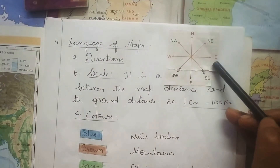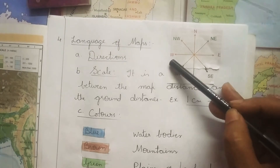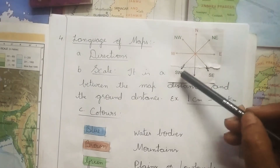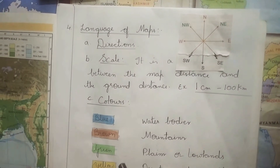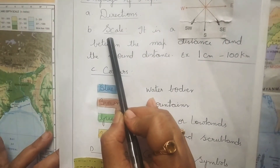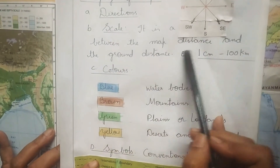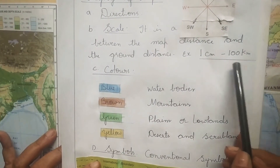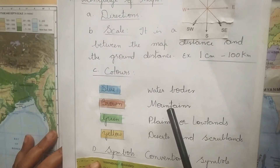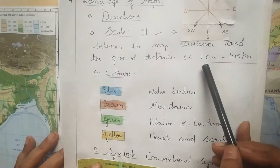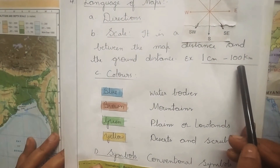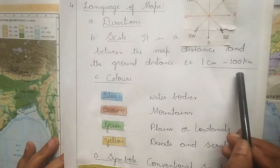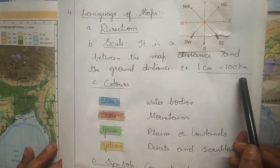The direction between north and east is northeast, between north and west is northwest, between south and east is southeast, and between south and west is southwest. The second important language of the map is scale. It is a ratio of map distance and ground distance. For example, one centimeter is equal to 100 kilometers — that means one centimeter on the map represents 100 kilometers on the real earth.